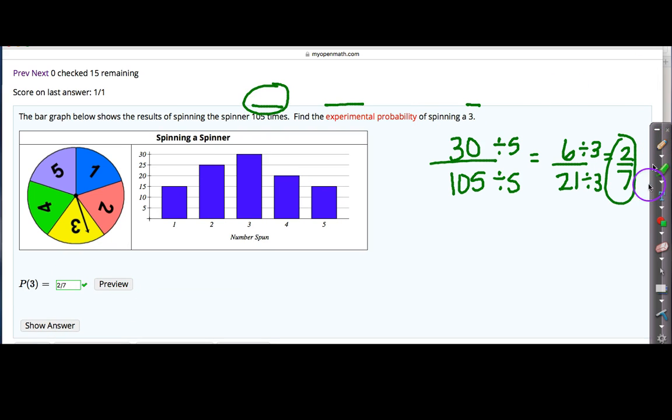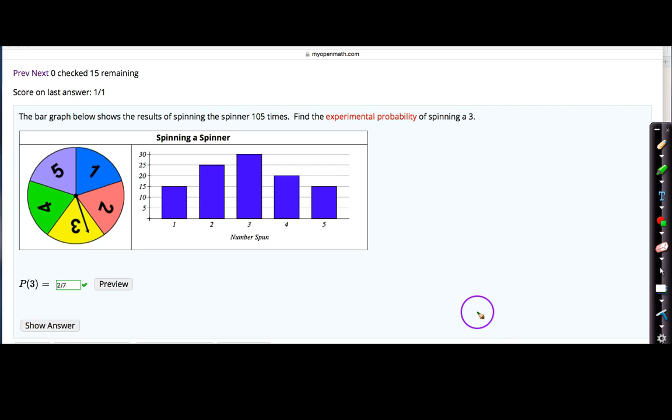Now some of you may be getting the wrong answer because you might be submitting an answer that's not reduced yet. For example, if you put in 6 over 21 as an answer, it would mark it wrong. Or if you're putting 30 over 105, that will also be wrong. So be very careful and make sure that you are reducing your answers completely.